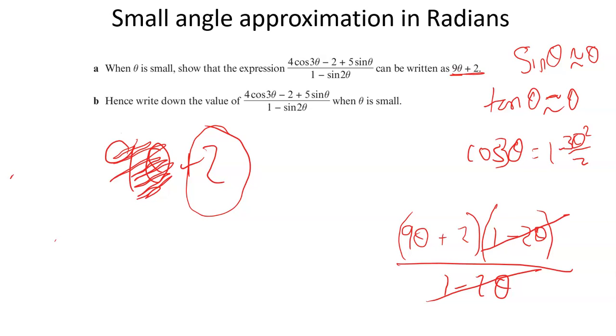So that is how you use a small angle approximation when you're in radians to simplify down equations and find the limit of a solution as an angle gets very, very small, and what that equation would be. If you have any questions, you can put them in the comments. But for now, cheerio.